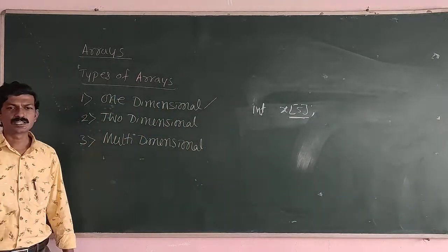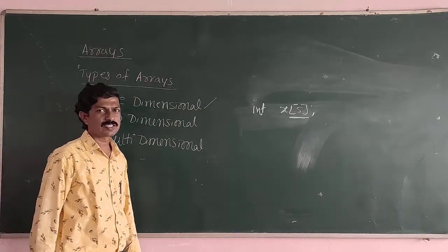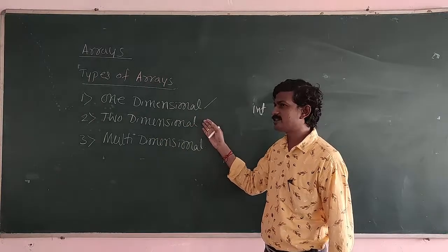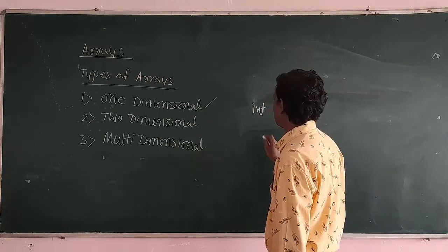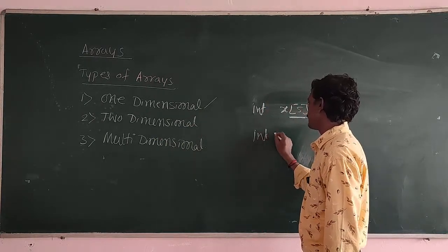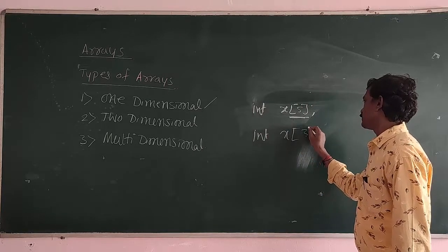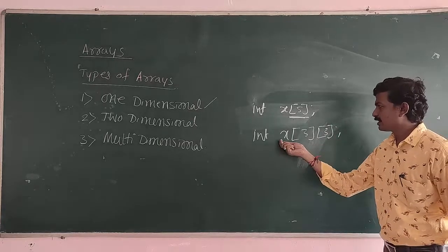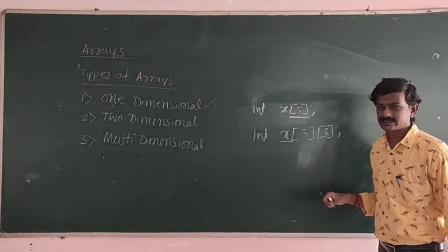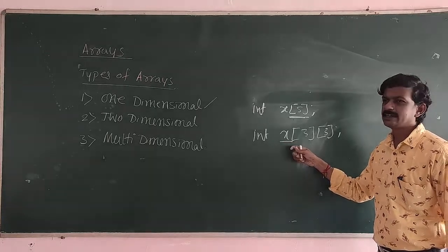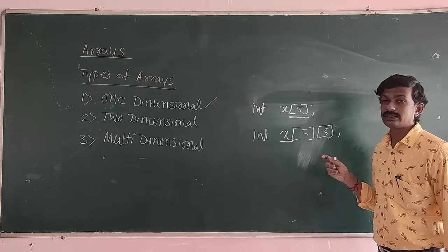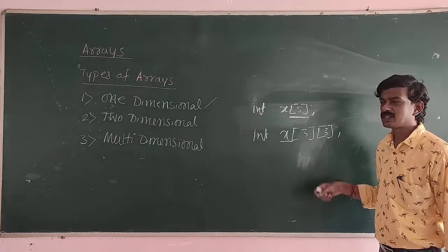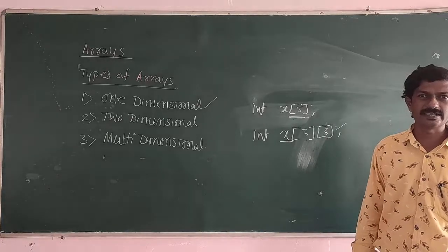The next one is two-dimensional Arrays. These are Arrays which are having two subscripts, meaning a number of rows and columns. Those are stored as two-dimensional Arrays. For example, integer x[3][3]. X is an Array which is able to store three into three — that is nine total elements — in the form of three rows and three columns. Such type of Arrays are called two-dimensional Arrays.